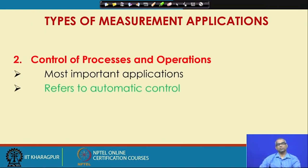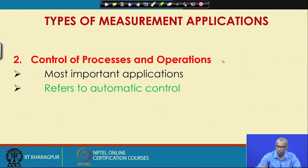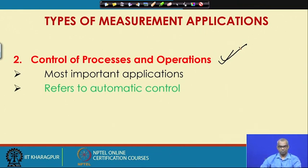Next comes control of processes and operations. The first application was only monitoring; the next, which is the most important application, refers to automatic control of processes. Here you not only monitor, you actually take corrective actions.